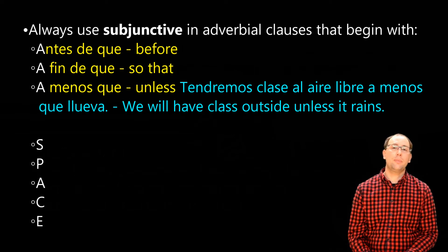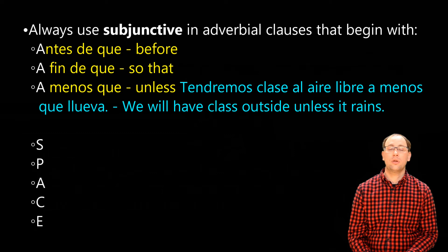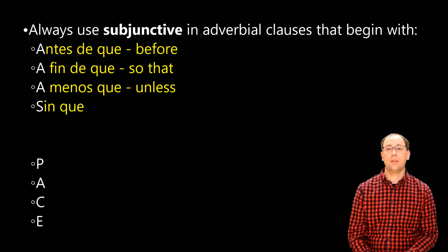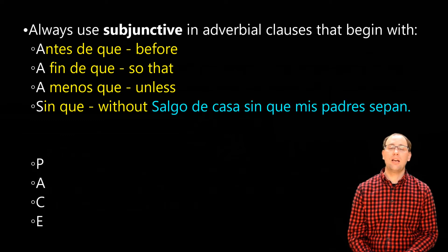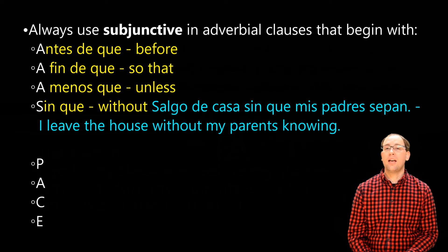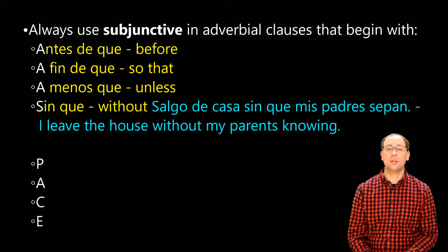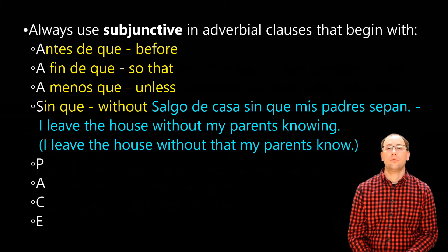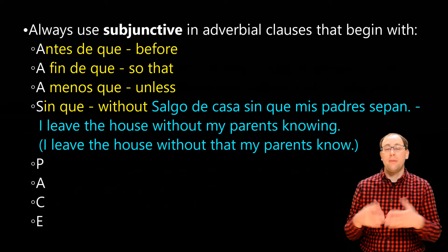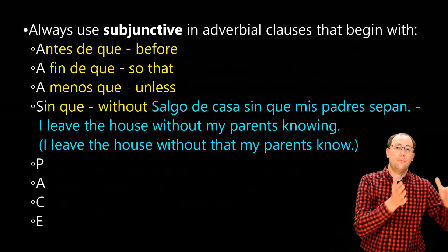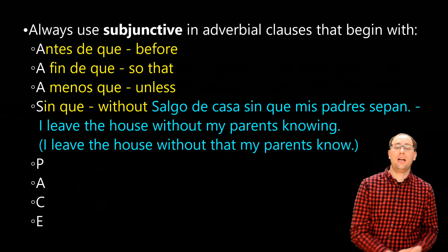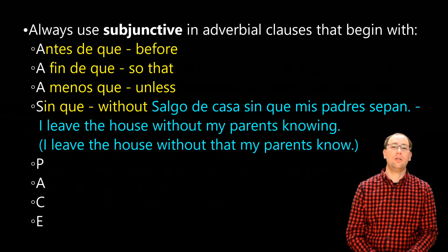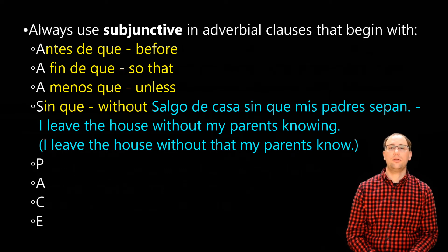Those are my three A's. Now onto 'space.' The S is for 'sin que,' meaning 'without.' We can see that in the example: 'Salgo de casa sin que mis padres sepan' — I leave the house without my parents knowing. At the time that I'm leaving the house, there's no certainty of my parents knowing that I'm leaving — there's no certainty of completion of my parents having knowledge of that. Subjunctive.